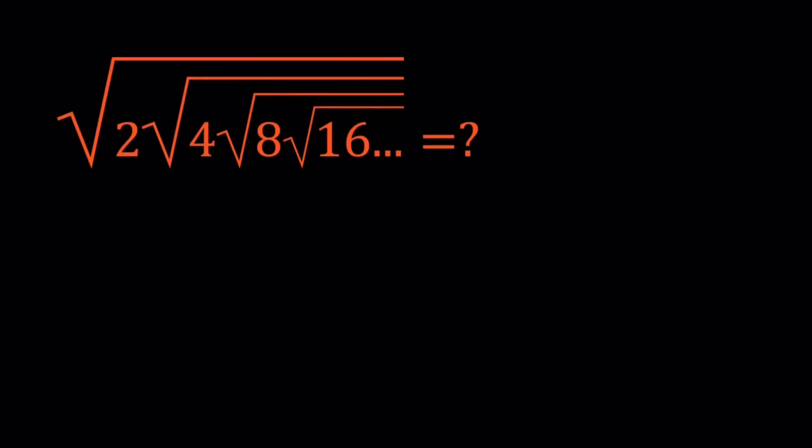Hello everyone. In this video we're going to be simplifying a radical expression, an infinite radical expression. We have the square root of 2 times the square root of 4 times the square root of 8 times the square root of 16, so on and so forth. All of these are square roots and the numbers inside the radicals are all powers of 2. Provided that this expression converges, we're going to find the value to which it converges.